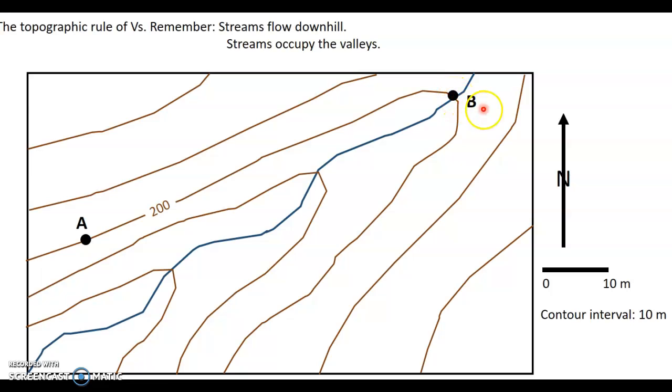So at point B, the elevation there must be at 200 meters because it lies on the same topographic contour line as point A. So in other words, the stream here at point B is at 200 meters.